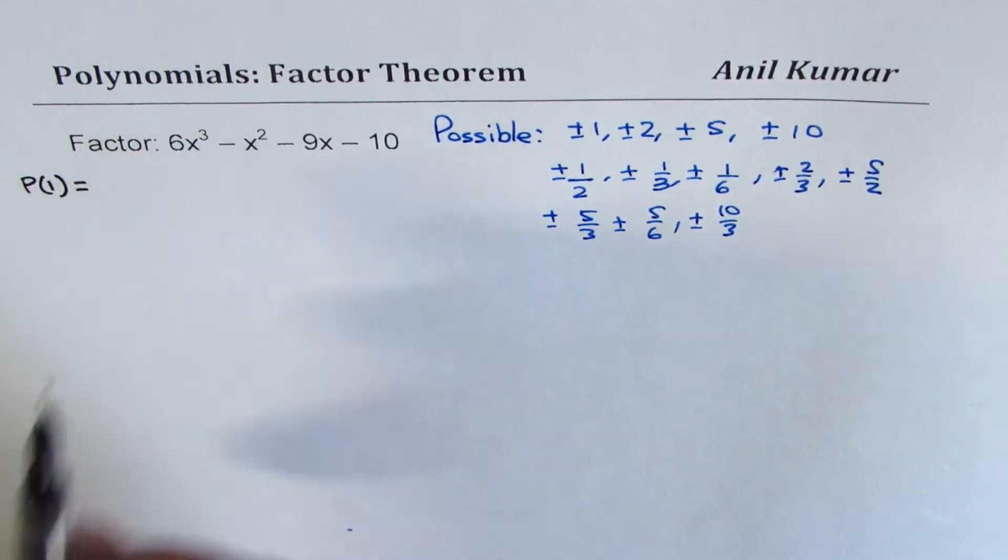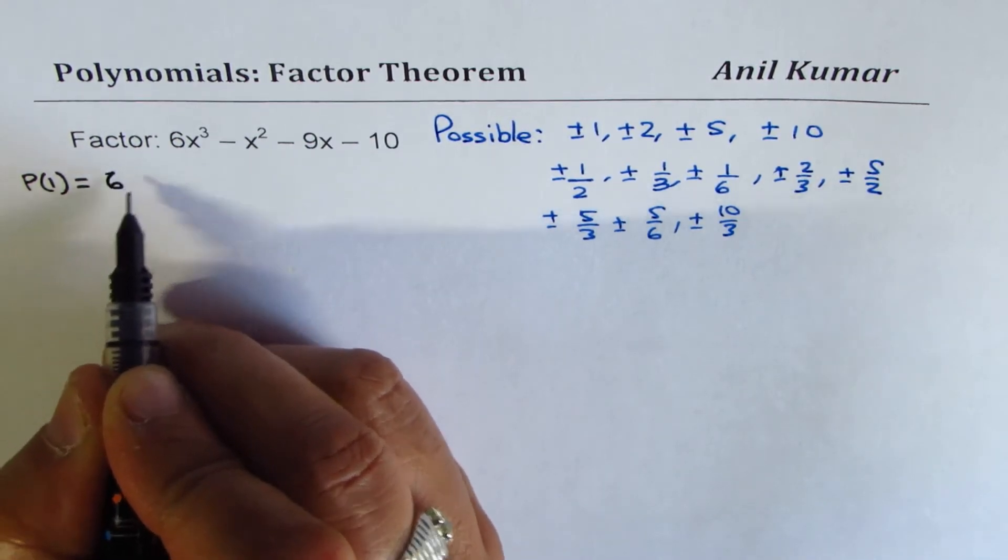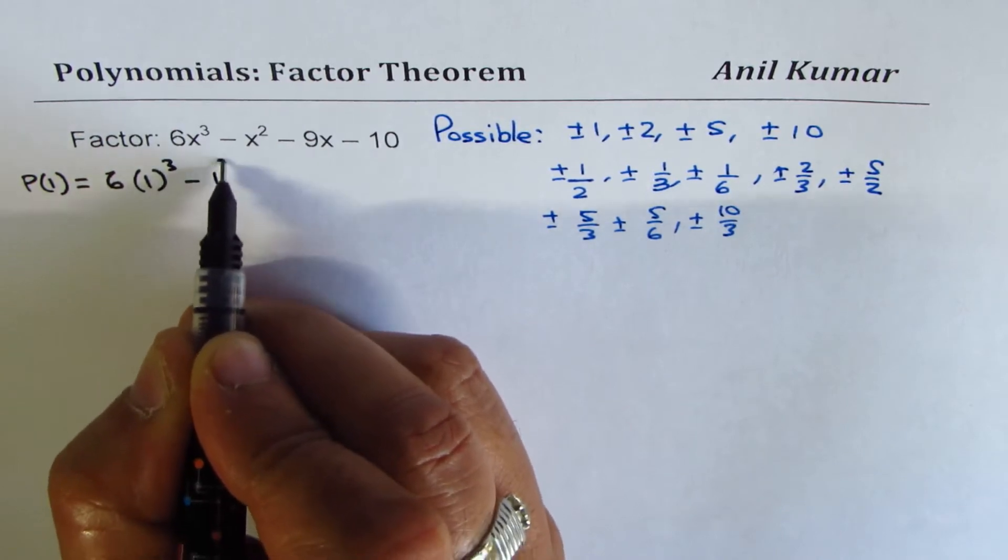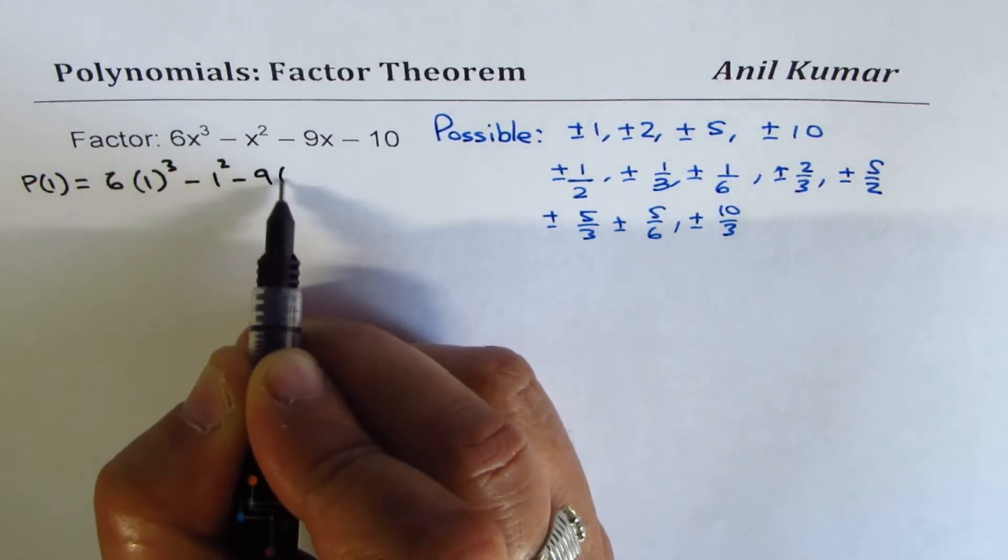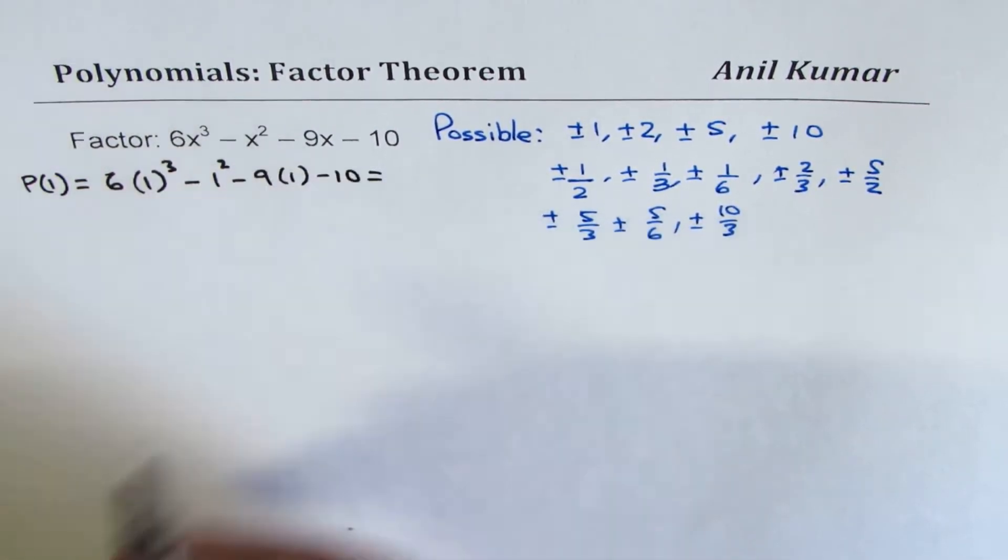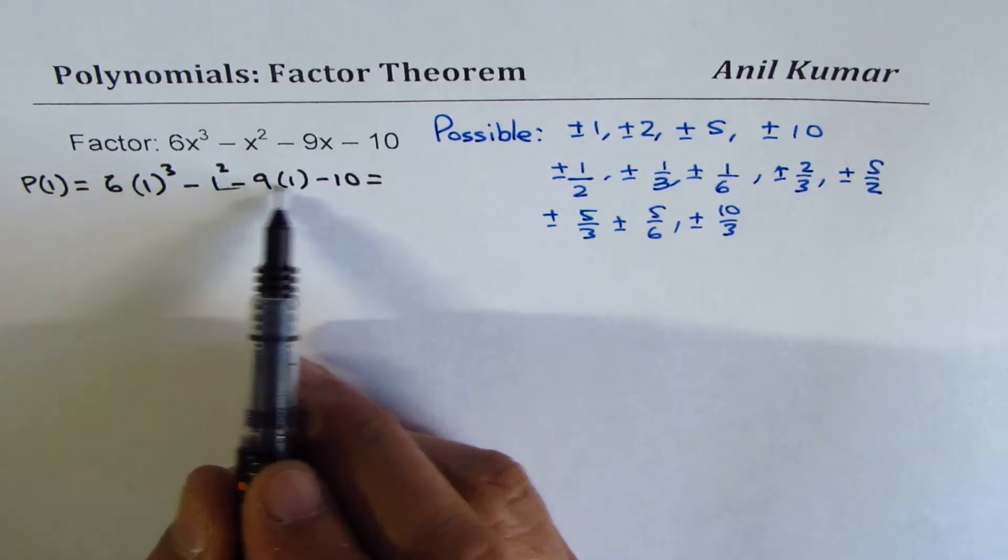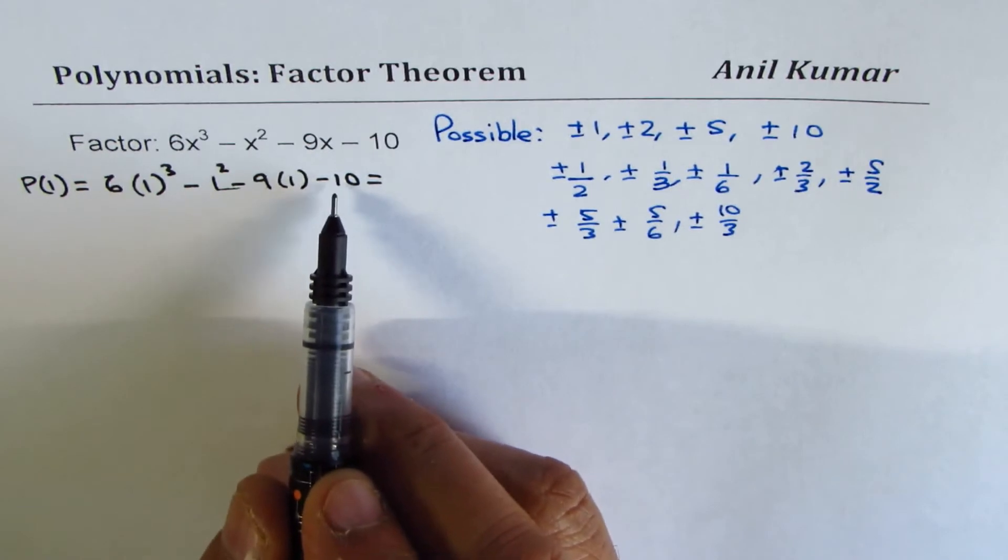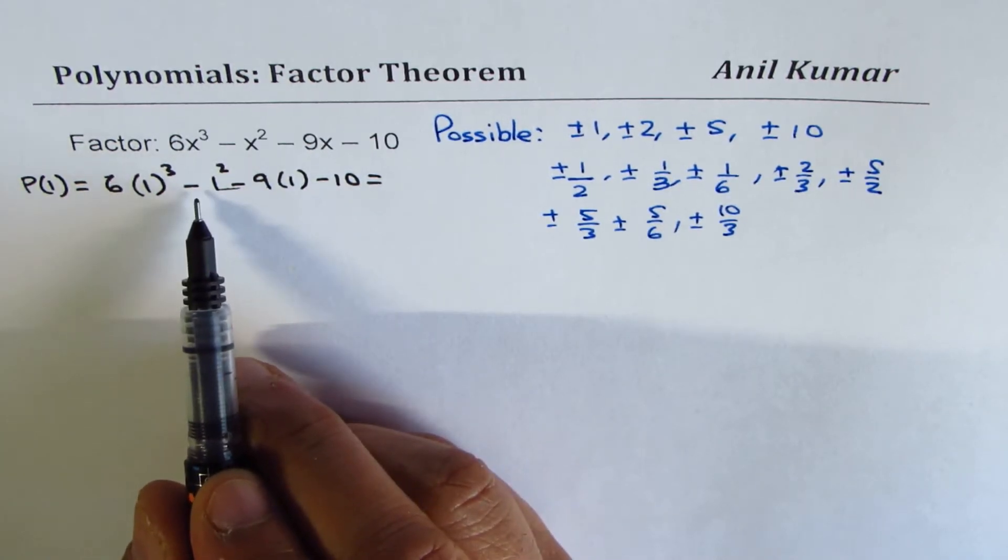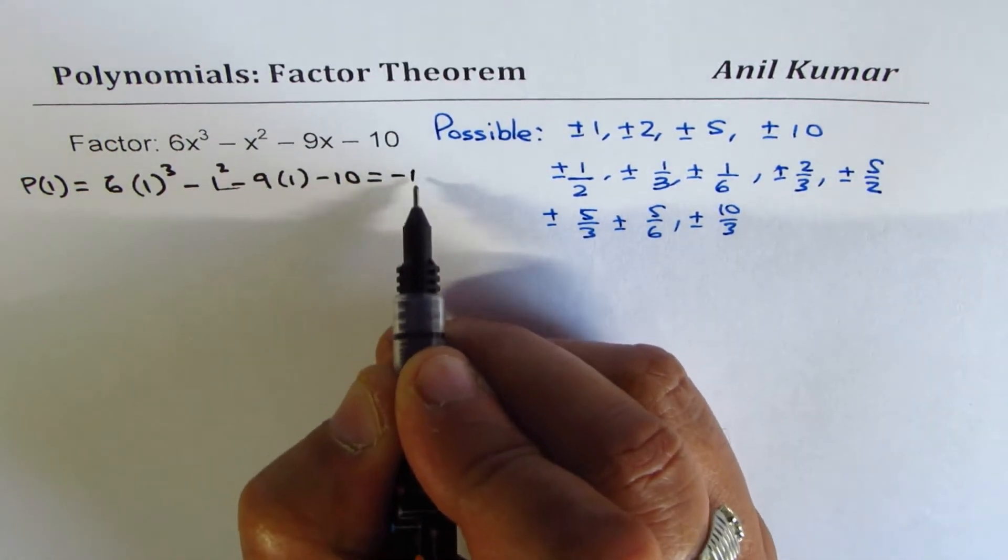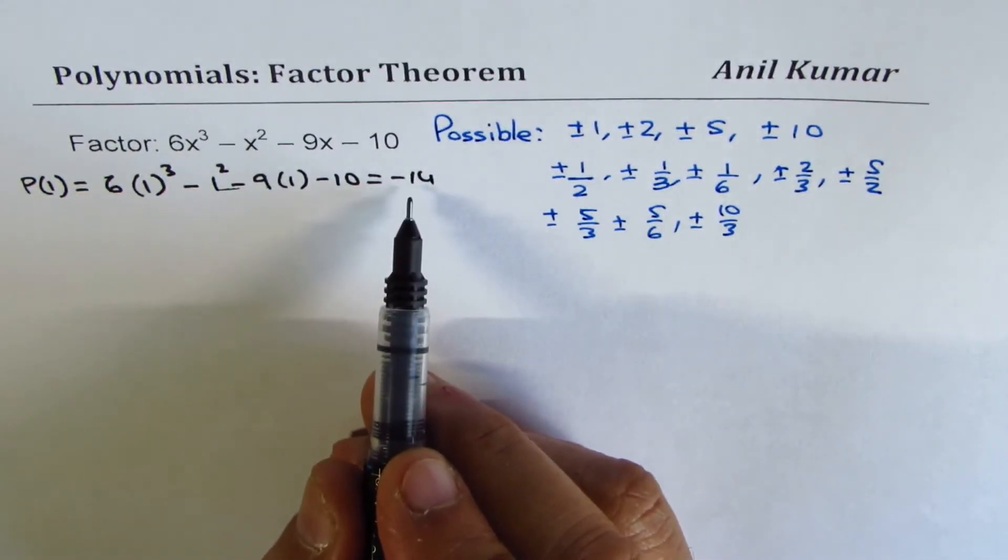When you plug in 1, what I'm trying to say here is we'll just plug in 1. So 6(1)³ - (1)² - 9(1) - 10 equals what? So it is 6 - 1, and these negative numbers, -10, -19, and this -20 will give us -14 as our answer. So we get a negative number.